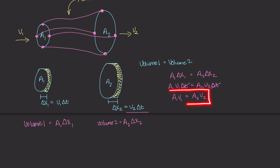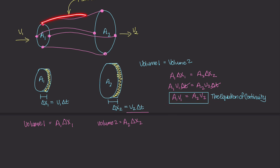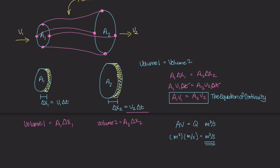This is the equation of continuity. It tells us that the volume entering a flow tube must equal the volume exiting at another point in that ideal fluid flow tube. The term A times V is called the volume flow rate, Q, typically measured in meters cubed per second — because area is in meters squared and velocity is in meters per second. For an ideal fluid, the volume flow rate Q is constant at all points in the flow tube.